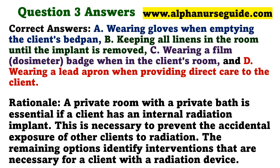Rationale: A private room with a private bath is essential if a client has an internal radiation implant. This is necessary to prevent the accidental exposure of other clients to radiation. The remaining options identify interventions that are necessary for a client with a radiation device.